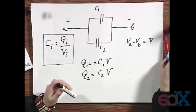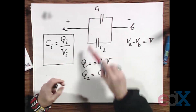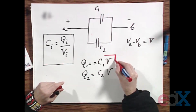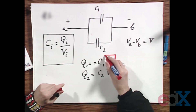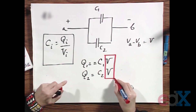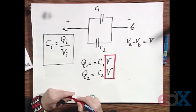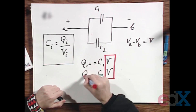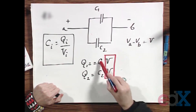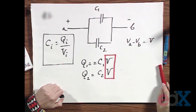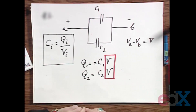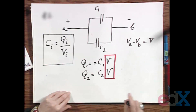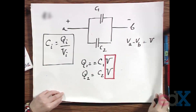In this particular case, where the two are parallel, they have the same voltage in common, and the Q's are clearly different because the C's are different. That's called parallel.